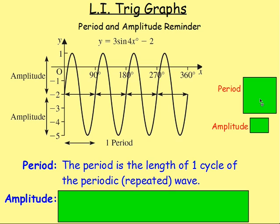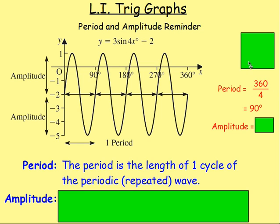So the length of one of the cycles then, you can see that one of the cycles here on the graph would be 90 degrees. So the period would be 90 degrees. Another way of finding it is to take the 360 degrees and divide it by how many cycles you have. Because there's a four in front of the x, it means you do 360 divided by four.